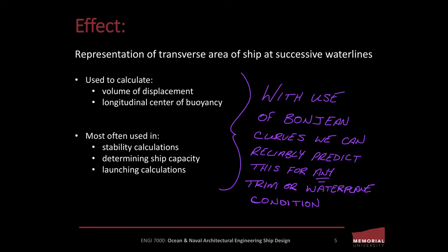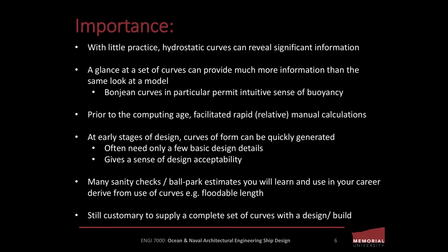So let's do a quick recap. Bonjean curves can be used to calculate a volume of displacement, as well as the local and, as a consequence, the longitudinal center of buoyancy of a vessel. The curves are most often used in stability calculations — in fact they are instrumental in traditional methods of damage stability and for launching calculations. The beauty of Bonjean curves is that they can be used to predict these behaviors at any trim or waterplane condition we impose on the vessel.